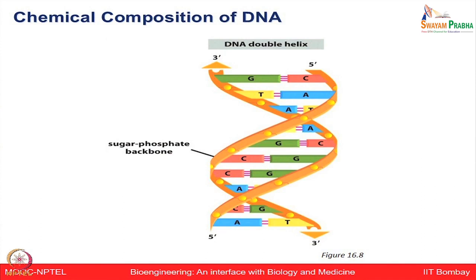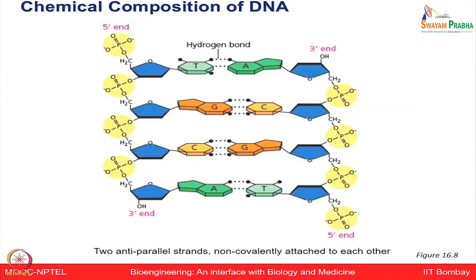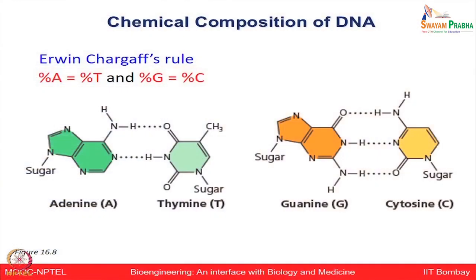Regarding the chemical composition of DNA: Watson and Crick elucidated the double helix structure of DNA and received the Nobel Prize. DNA has AT and GC base pairs — A pairs with T via 2 hydrogen bonds, and G pairs with C via 3 hydrogen bonds — complementary base pairing. Erwin Chargaff derived the rule that the percentage of A base pairs equals the percentage of T base pairs, and the percentage of G base pairs equals the percentage of C base pairs.